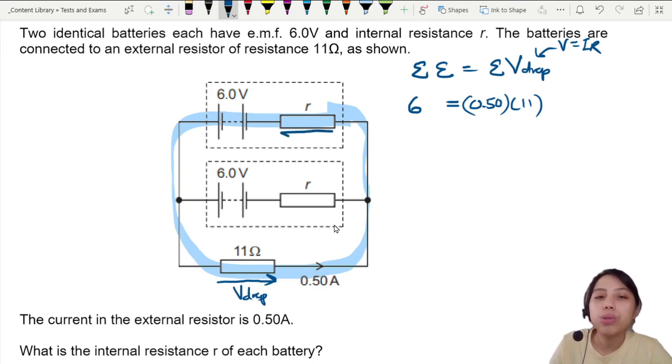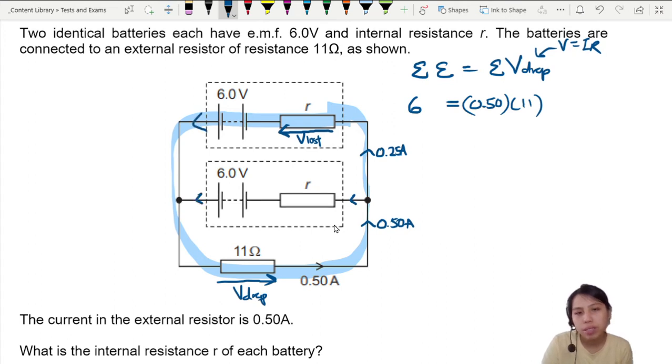This one—you also lose energy here. So there will be a potential drop or what we call lost volts. But you have to be very careful what current we use here. The current flowing through this part is actually only 0.25A. A lot of people missed out on that spot. If here the current is 0.5, then you have two points where the current will flow out like this. So here's 0.25, here's 0.25.